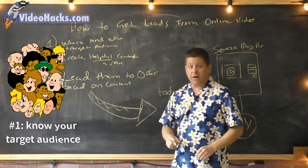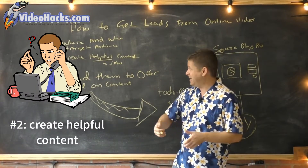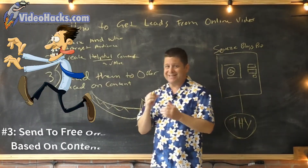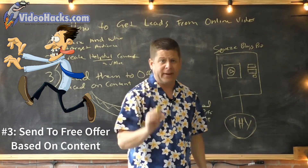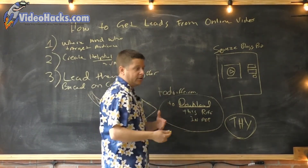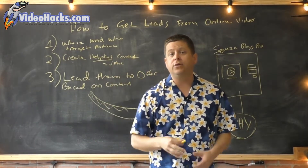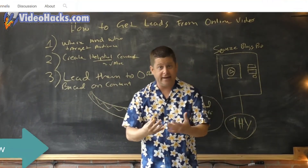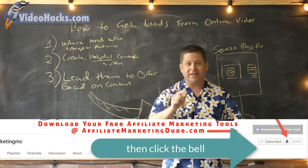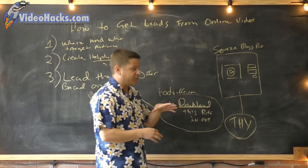So: number one, where are they and who are they? Number two, create some helpful content. Number three, lead them to the offer based on the content — very important that it's based on the content, that's why we say 'download this riff' or 'download this checklist.' For example, I have a lot of book reviews on my YouTube channel. Subscribe and click the bell and you'll be notified when I come out with new stuff.